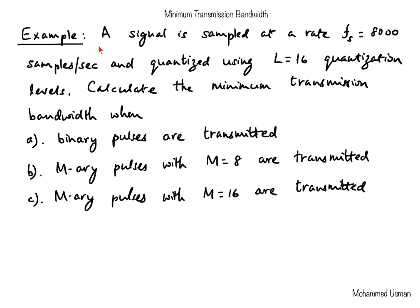The example states that a signal is sampled at 8000 samples per second and quantized using 16 quantization levels. We are asked to find the minimum transmission bandwidth when the digital signal is transmitted using binary pulses, with 8-ary pulses (M=8), and with M=16. When you see the word 'binary,' that corresponds to M equal to 2.